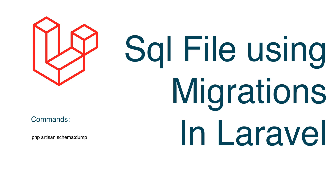For creating a SQL file, you need to run the command `php artisan schema:dump`. This will basically generate a SQL file, and inside that file you will have your CREATE TABLE or ALTER TABLE commands. Think of it this way — migration behind the scenes runs SQL commands only, and those commands you will get in this SQL file.